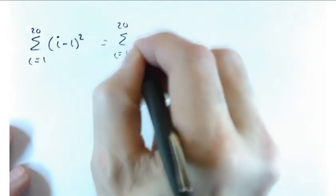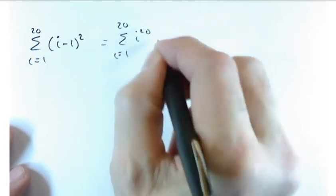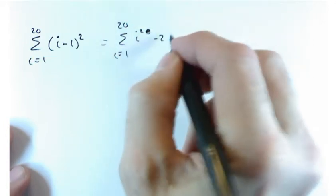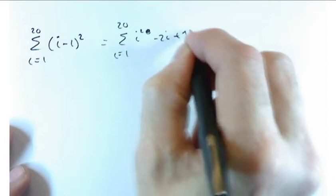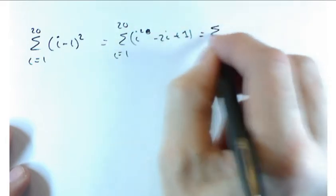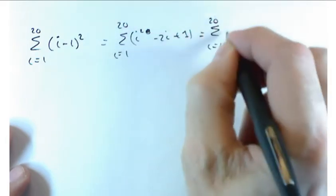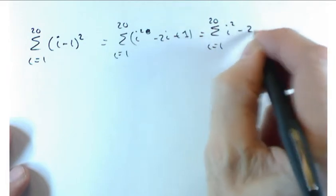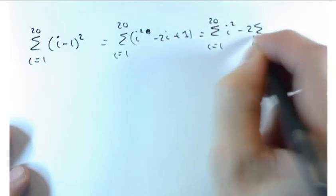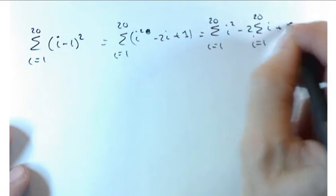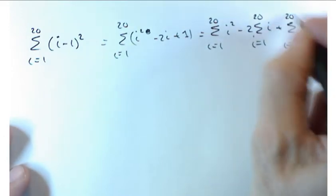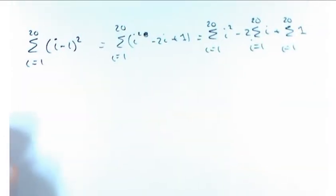I equals 1 to 20, then you get the I squared minus I squared minus 2I plus 1 and then expand it out there. The sum from I equals 1 to 20 of I squared minus 2 times the sum from I equals 1 to 20 of I plus the sum from I equals 1 to 20 of 1. That's a brute force approach.